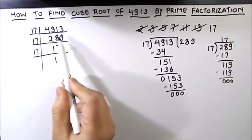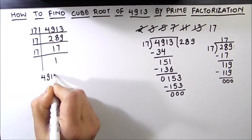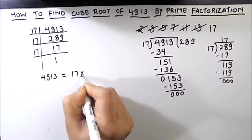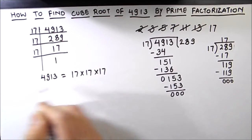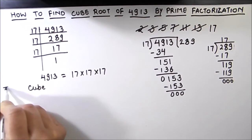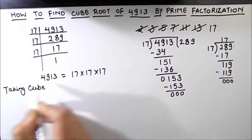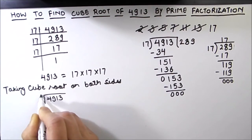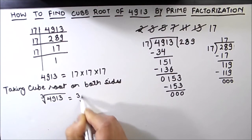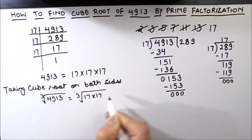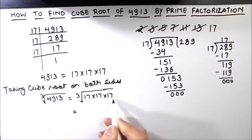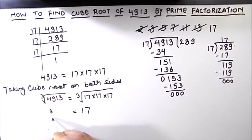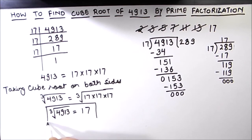So now we have all the prime factors of this number. We can write 4913 as 17 times 17 times 17. Taking the cube root on both sides: the cube root of 4913 equals the cube root of 17 times 17 times 17. Since the cube root of a perfect cube is the number itself, the cube root of 4913 is 17. This is how you can find the cube root of any number using the prime factorization method.